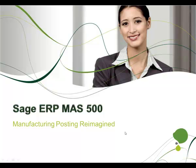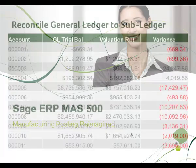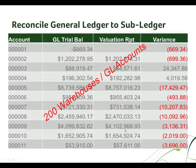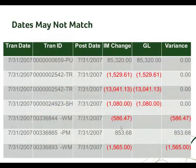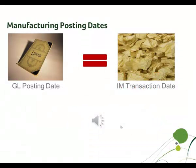Sage ERP MAS 500 Manufacturing Posting Reimagined. Imagine trying to reconcile the general ledger to the subledger when there are 200 warehouse and GL account combinations. In this particular instance, that was just the case. Furthermore, some of the dates may not have matched. In fact, there were over 400 lines and many of the dates did not match. Nor did the transactions from the subledger match up dollar amount for dollar amount to journal entries.